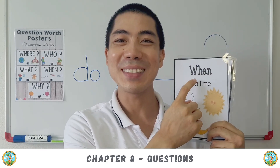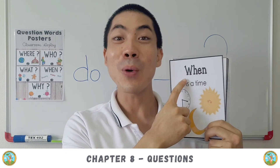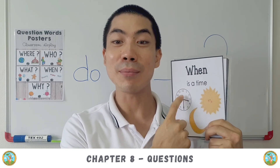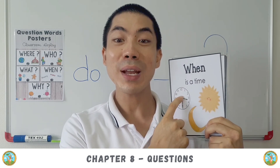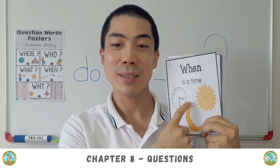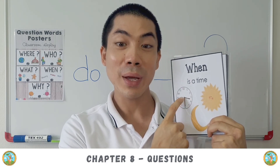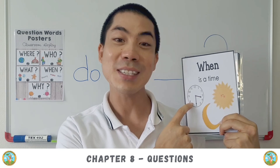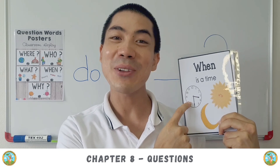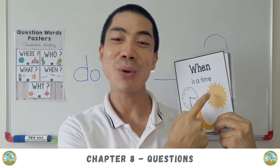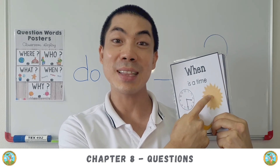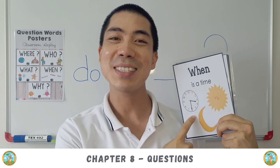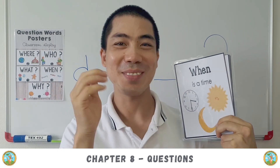Number three: when. When is a time. When is it? This is 3:30. When is this? This is in the daytime. When is this? At night time.